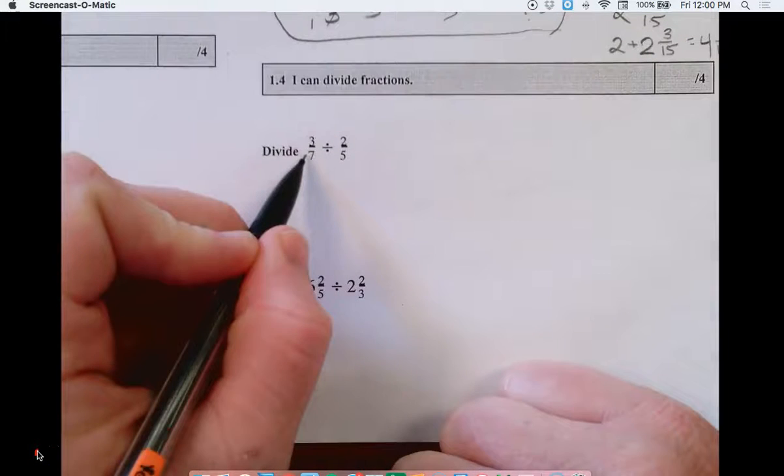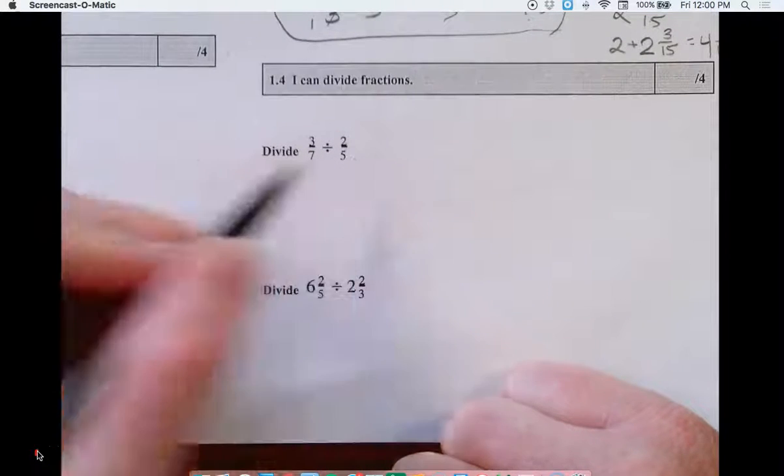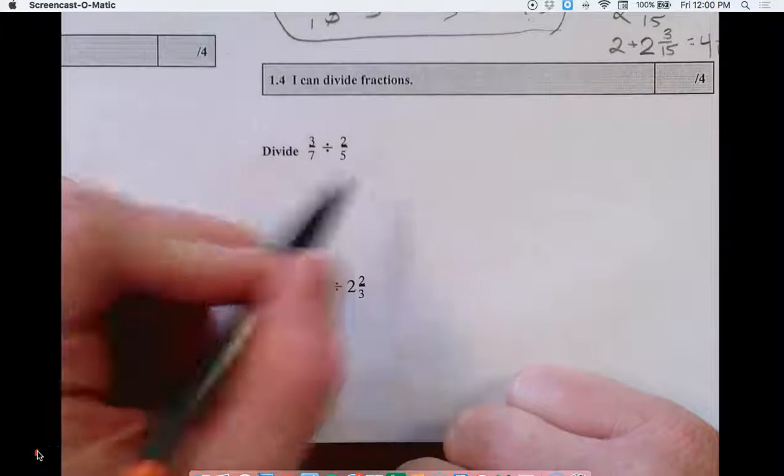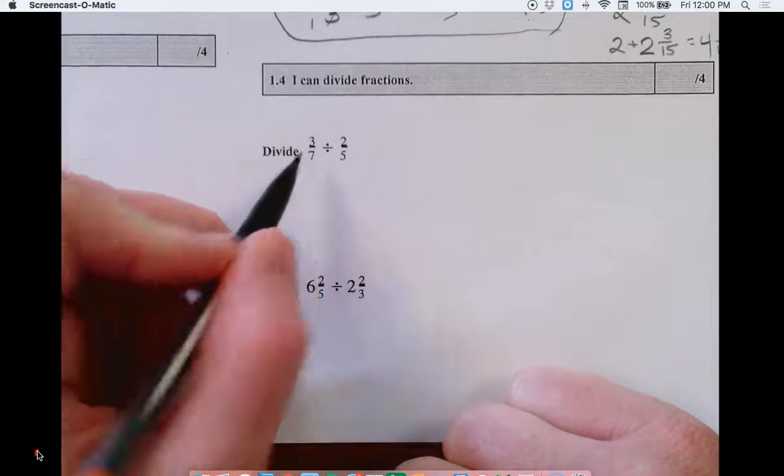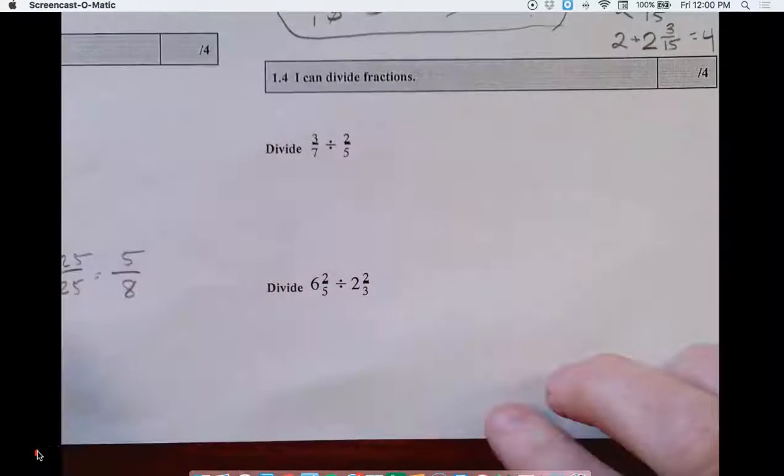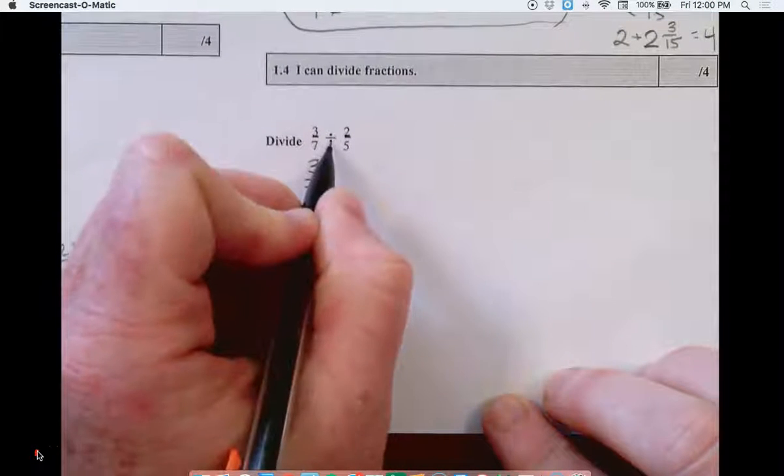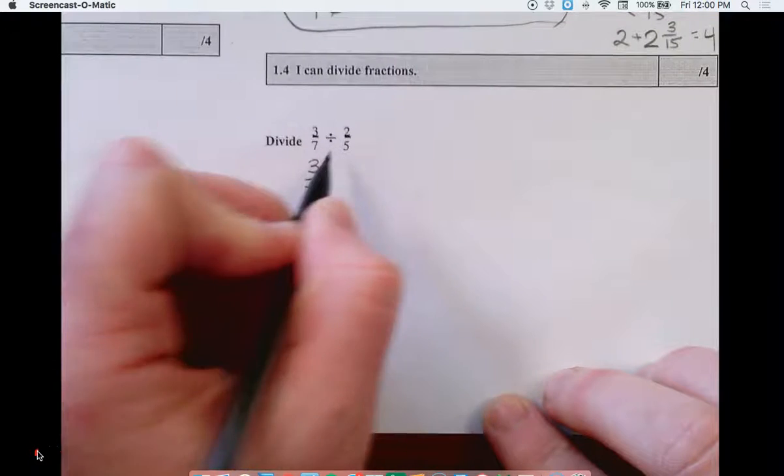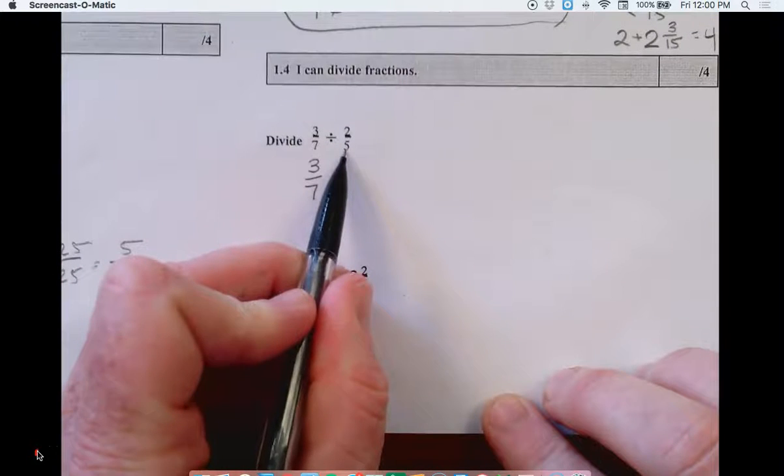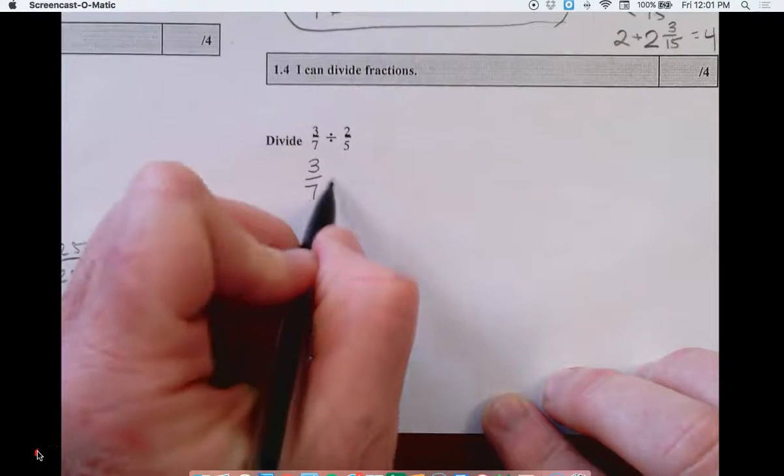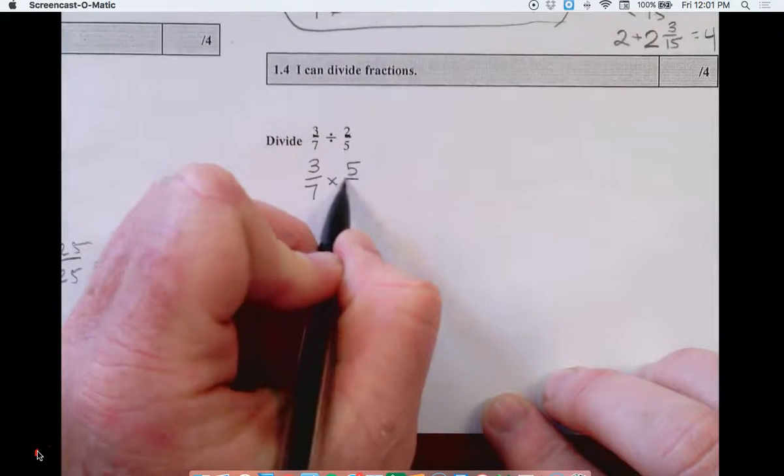Okay, three-sevenths divided by two-fifths. So how many two-fifths are there in three-sevenths? Well, I don't know off the top of my head, so we'll have to take three-sevenths and we're going to turn this into multiply by the reciprocal of the second fraction. Reciprocal means to flip.